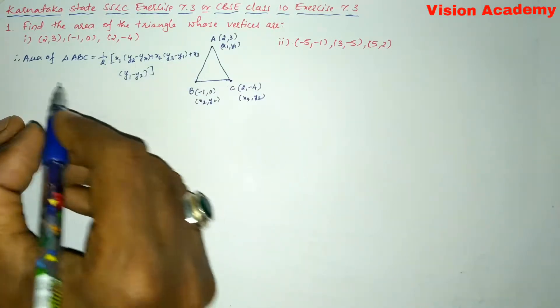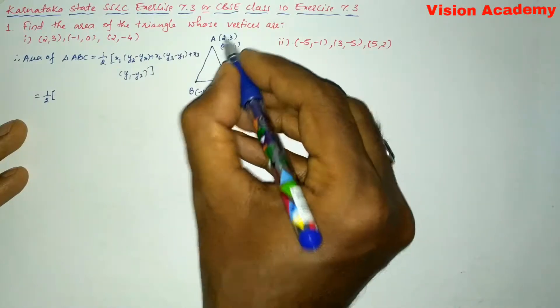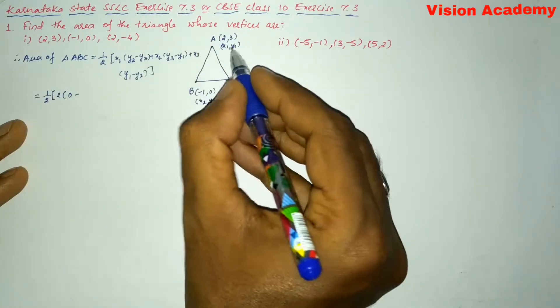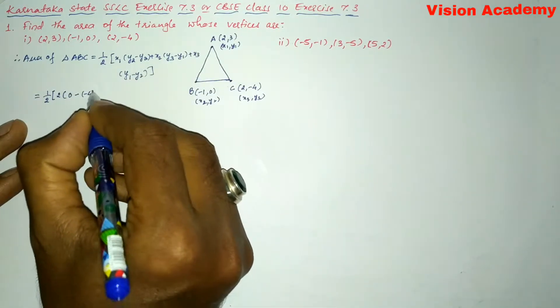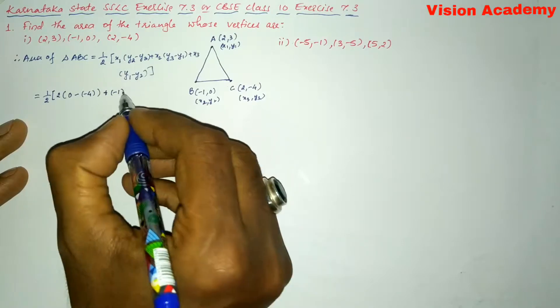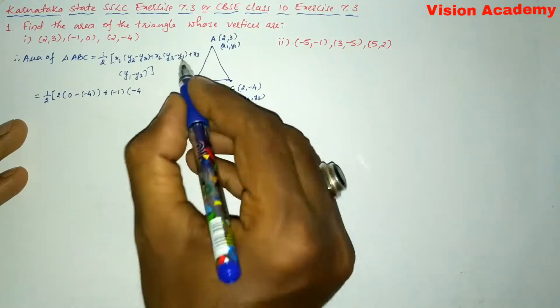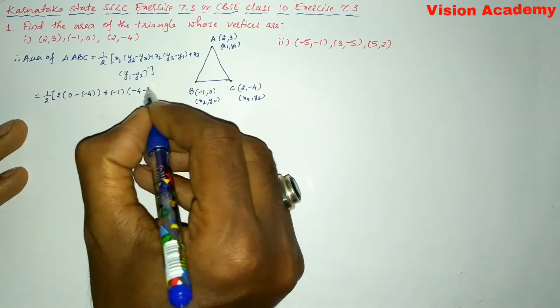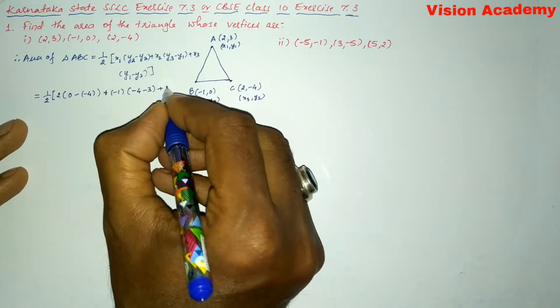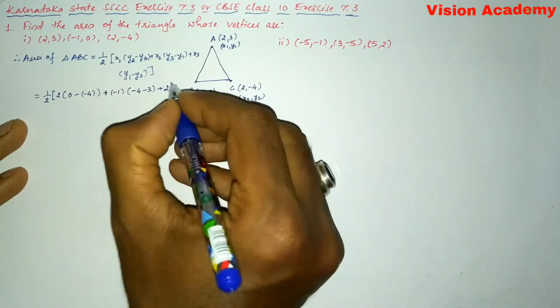Here let us substitute the values. That is 1/2 into x1 is 2, y2 is 0 minus y3 is -4. Next plus x2 is -1 into y3 is -4 minus y1 is -3 plus x3 is 2 into y1 is 3 minus y2 is 0.